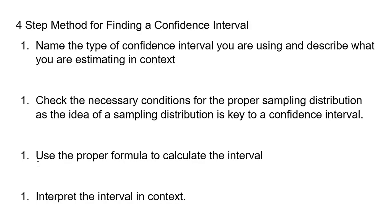Step two: check the necessary conditions for the proper sampling distribution, as the idea of a sampling distribution is key to a confidence interval. Step three: use the proper formula to calculate the interval — that's actually doing the work to find it. Step four: interpret the interval in context. That's one step a lot of students forget about. I'm going to walk through this problem following the four-step procedure.